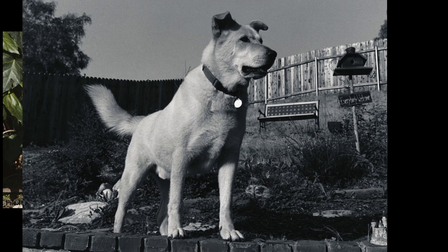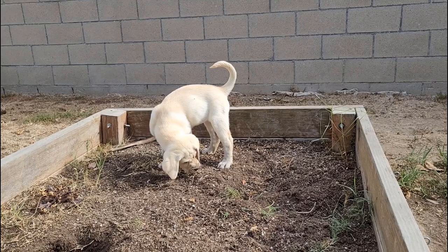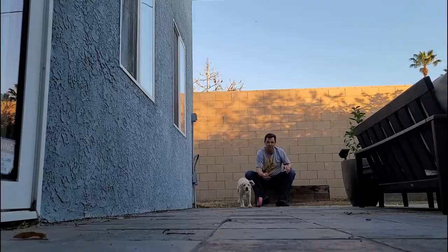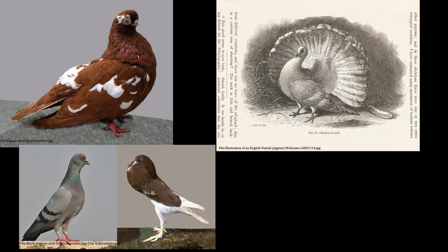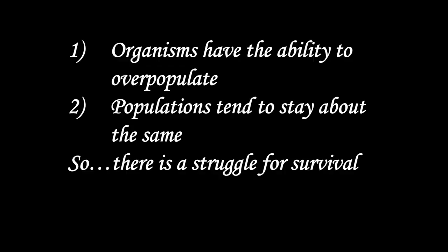Darwin noticed that many domesticated animals, such as dogs, had been selected and bred for particular characteristics. Darwin even raised and bred pigeons, carefully measuring the characteristics inherited in different breeding lines and how these seemed to match the characteristics found in the wild rock pigeon. Drawing from his knowledge of geological change, domestic breeding of animals, and the wide range of species he had encountered on the HMS Beagle, it appears that around 1837 Darwin had finally figured the idea out.